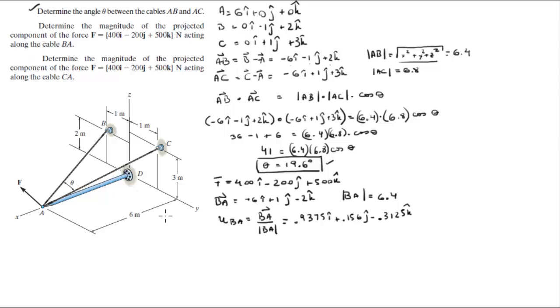If you want to find the projection of F along BA, what you got to do is you got to do the dot product between the force vector and the univector for BA, which is this tiny vector right here with a magnitude of 1. So this is 400I minus 200J plus 500K dot 0.9375I plus 0.156J minus 0.3125K.